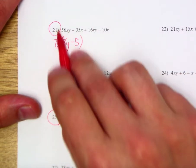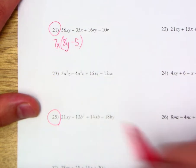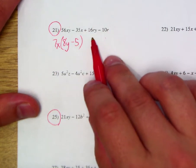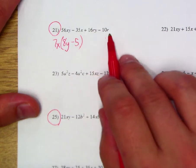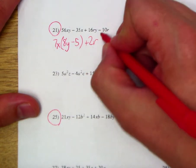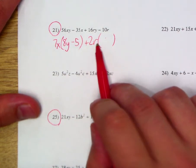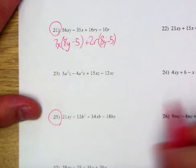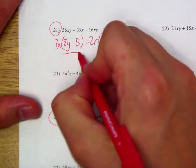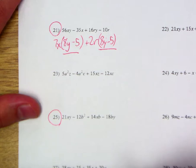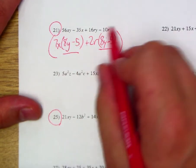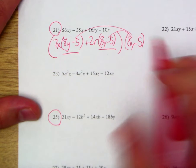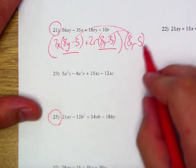7x times 8y is indeed 56xy. 7x times negative 5 is a negative 35x. Let's try the same thing back here and see if we can continue factoring these. They have an r in common, and in addition, they're both even. So I'm going to leave us with an 8y, and negative 10r divided by 2r is going to leave us with a negative 5.